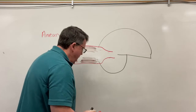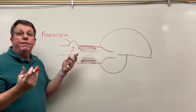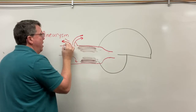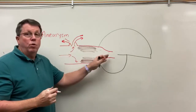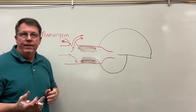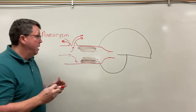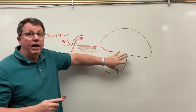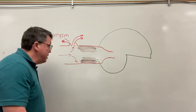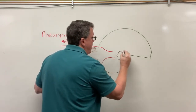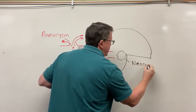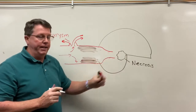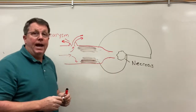As the blockage continues to close, more and more pressure builds against the aneurysm, and eventually the aneurysm may break open. Blood then leaks out of the bloodstream — like a leak in a pipe or a hole in a bicycle tire. The blood can no longer reach that part of the brain, and nerves start to die. We call this necrosis.